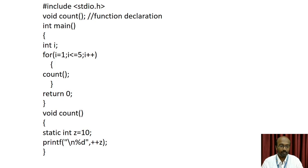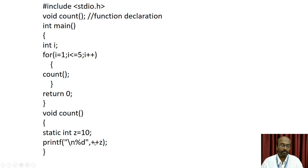We have printed ++z, so the value of z is incremented and then printed. Let's discuss how the program works. First, i is initialized as 1 and the condition 1 less than or equal to 5 is checked — it is true, so the program enters the block and the function call is made. The statement static integer z equal to 10 is executed, and since it is a static variable, it is assigned only once.